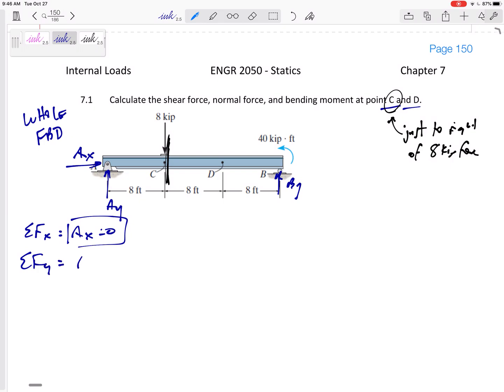Summing the forces in the Y direction, AY minus 8 plus BY equals 0. And then summing the moments, let's sum the moments about A. We've got 8 kips acting 8 feet away, creating a negative moment. We've got a positive 40 and we've got a BY acting 8, 8, 8, what is that, 24, correct me if I'm wrong, equal to 0.